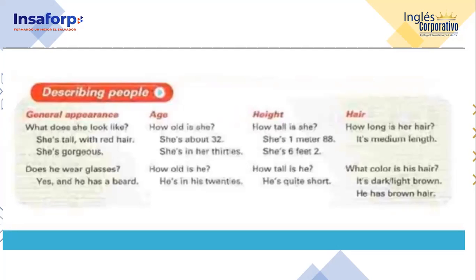Y hay otros aspectos como la barba y el bigote. You can say he has a mustache and he has a beard. What's the meaning of gorgeous? It's very attractive — es muy atractivo. It's a synonym of beautiful, pretty, cute, or attractive. That is gorgeous.